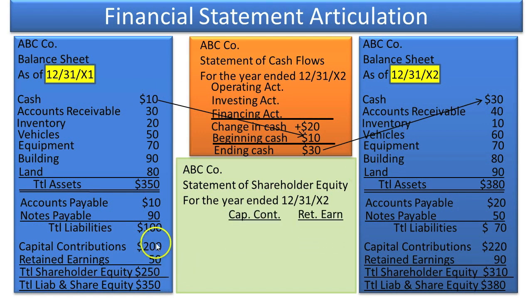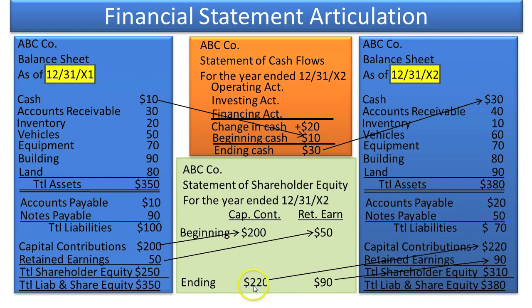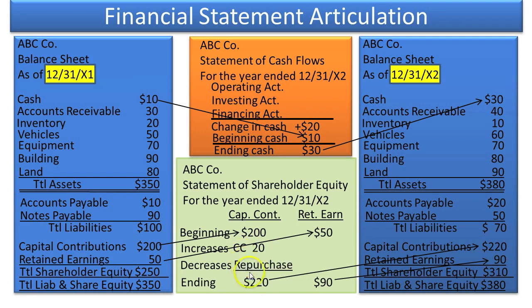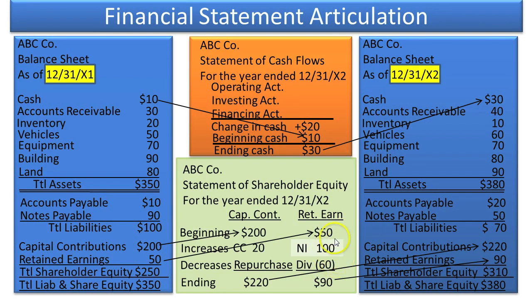We break the statement of shareholder equity into two pieces: capital contributions and retained earnings. We have beginning balances from the prior year and ending balances from the current year, and we explain why we went from $200 to $220 and from $50 to $90. Owners contributed an extra $20 of capital. On retained earnings, we take net income from the income statement — which increases the earnings owners can retain — and deduct dividends paid out. The net change is a $40 increase, going from $50 to $90.